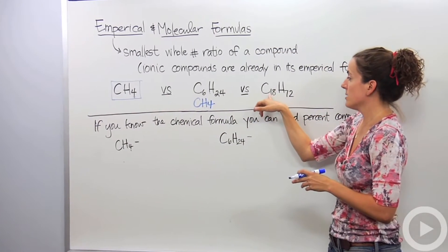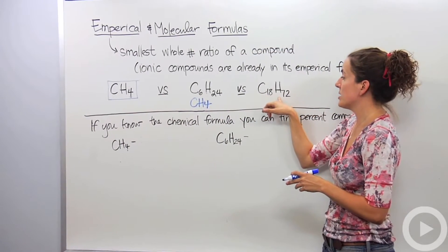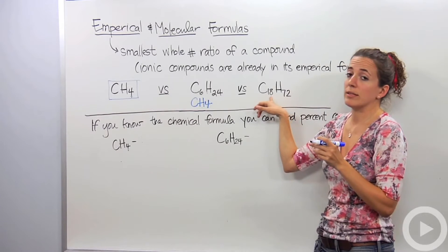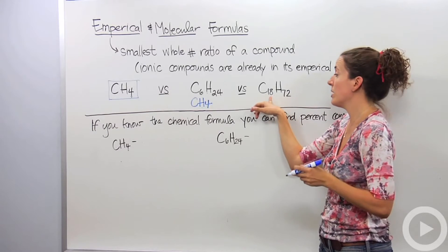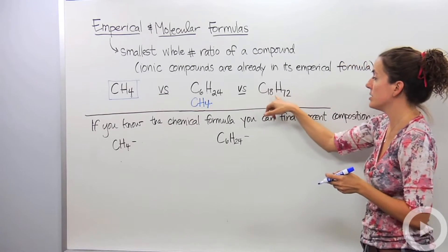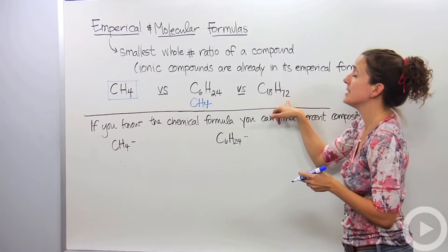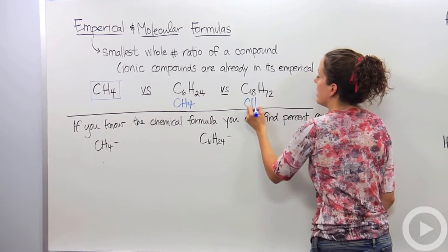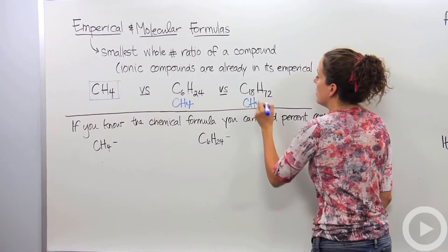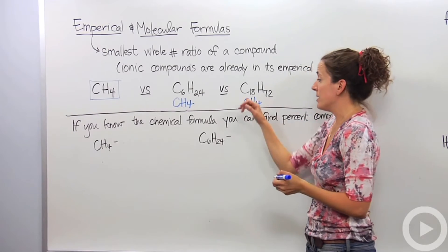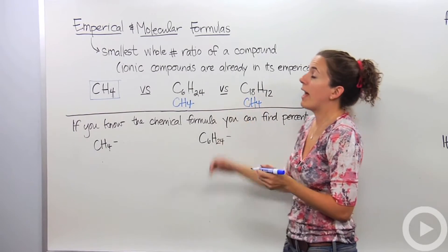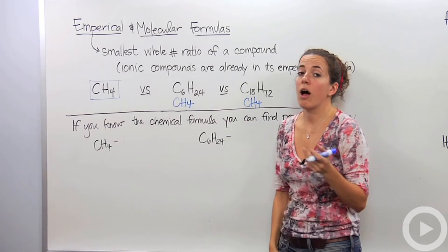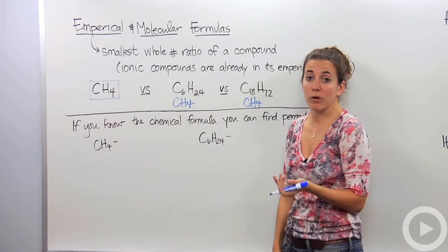Let's look at C18H72. This is also a molecular formula, but it can be reduced. 18 can go into itself and 72, making its empirical formula also CH4. So anytime you have the lowest ratio, that's an empirical formula. If it's not in its lowest ratio, we're going to call it a molecular formula.